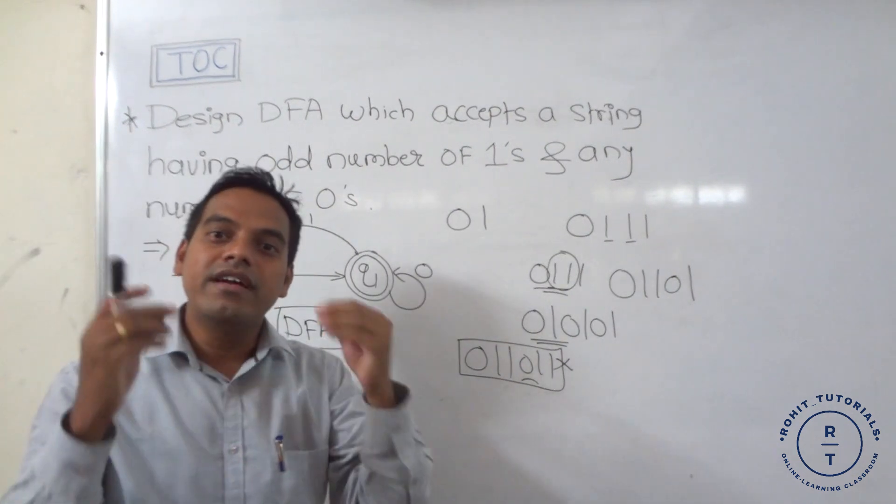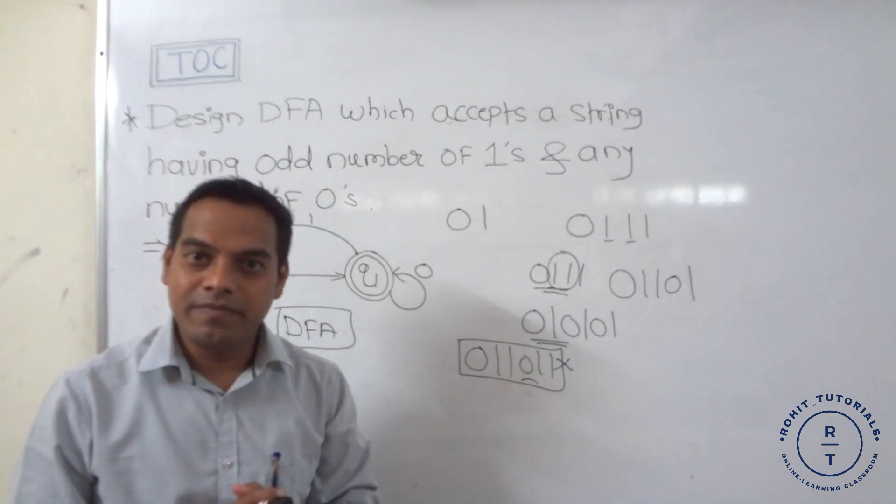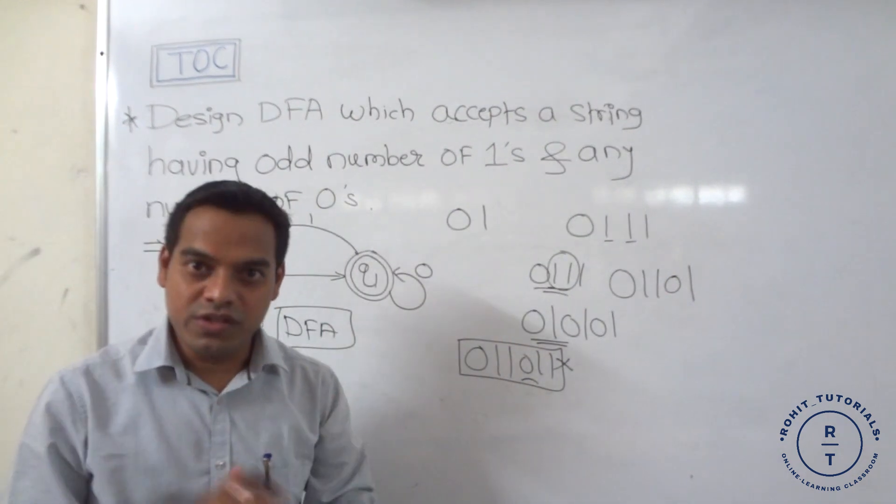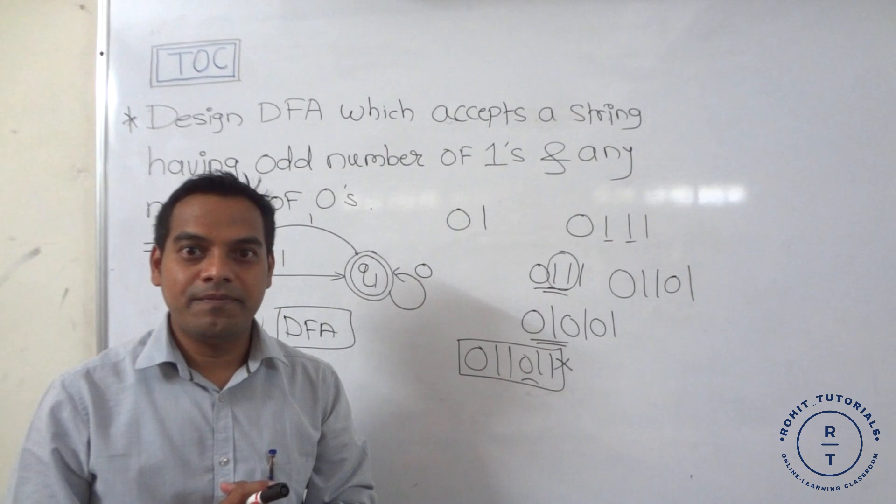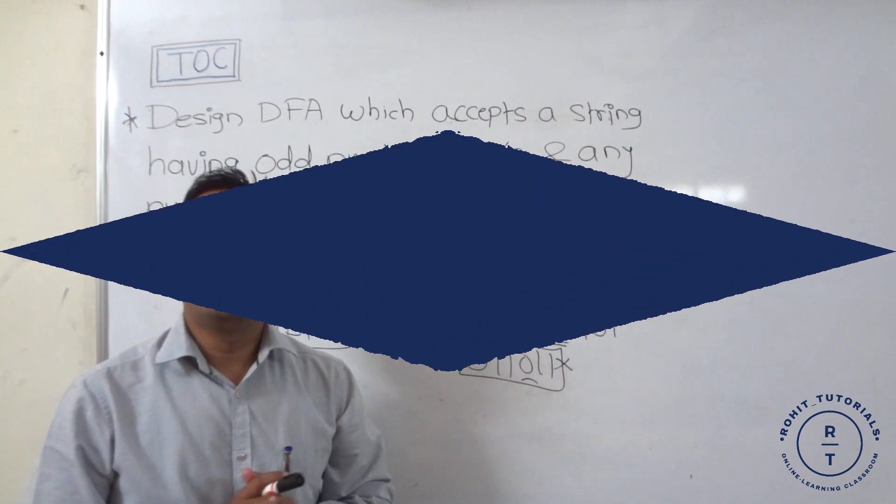This is the final deterministic finite automata for the given problem: strings having an odd number of ones and any number of zeros, meaning zeros can appear at any time in any quantity. Thank you.